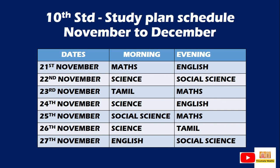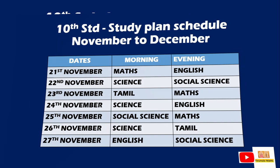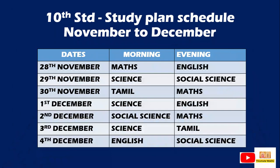On 25th November, Social Science and evening Maths. On 26th November, Science and evening Tamil. On 27th November, English and Social Science. The same plan repeats for the next seven days — 28th, 29th, 30th November, and 1st, 2nd, 3rd, and 4th of December — with the same subjects in the morning and evening slots.